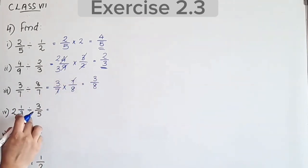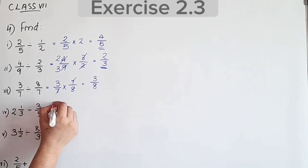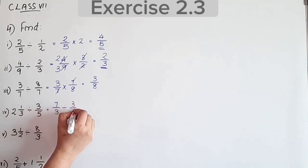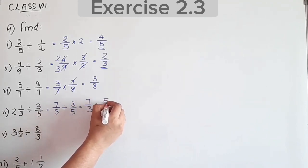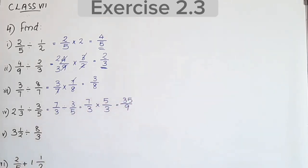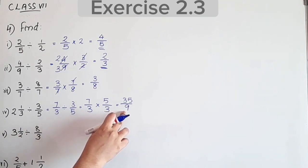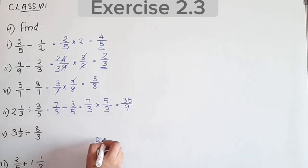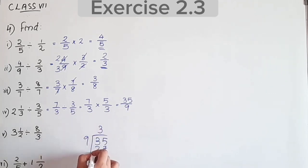Next question: 2⅔ divided by 3/5. Convert mixed fraction: 3 into 2 is 6, plus 1 is 7, so 7/3. Divided by 3/5: take reciprocal of 3/5 which is 5/3. Equal to 7 into 5 is 35, by 9. This is an improper fraction, convert to mixed fraction: 35 divided by 9, 3 times 9 is 27, remainder is 8. So the answer is 3 and 8 by something.